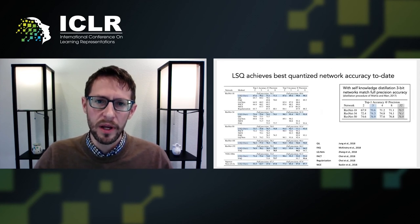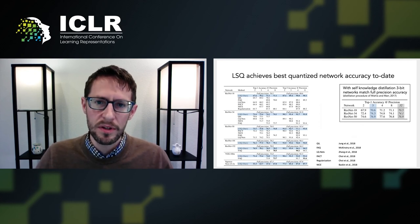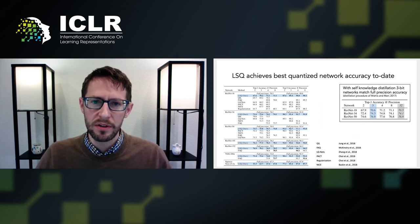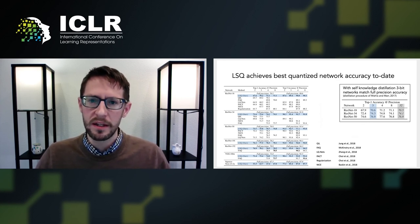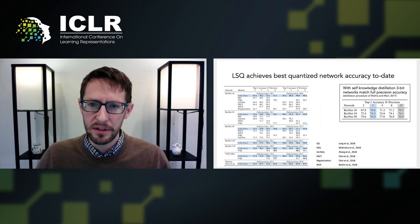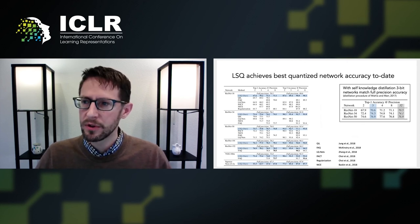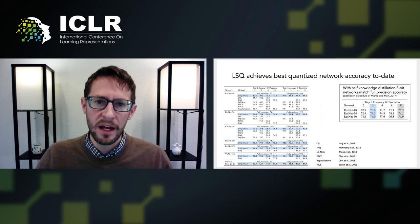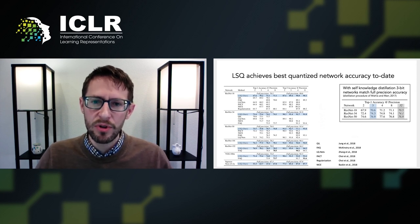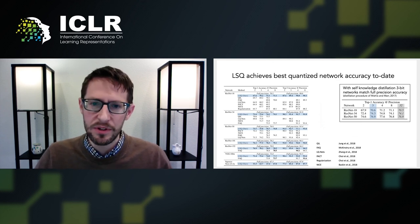On the ImageNet dataset, LSQ achieves better performance than all prior quantization methods for the networks considered, with an improvement of over 1% in some cases. We also found that when combined with self-knowledge distillation — using a technique previously demonstrated for quantized networks by Mishra and Maher — networks quantized to as little as three bits of precision were able to match the accuracy of full precision equivalent networks, the first time that this has been demonstrated.